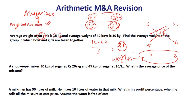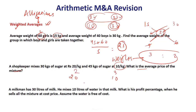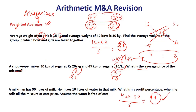Let's apply it once again. A shopkeeper mixes 30 kg of sugar at 20 rupees per kg and 45 kg of sugar at 10 rupees per kg. What is the average price of the mixture? The weights are 30 and 45, so the ratio is 2 is to 3. So 2 into 20 is 40, 3 into 10 is 30, divided by 2 plus 3 equals 5. Therefore the answer is 14 rupees per kg.